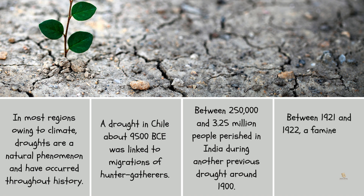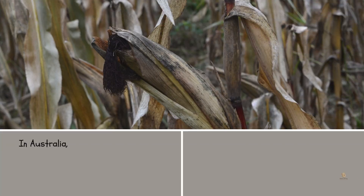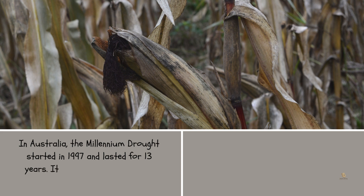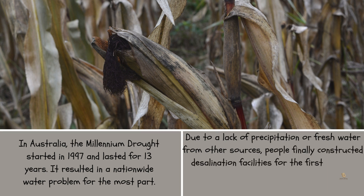Between 1921 and 1922, a famine that killed 5 million people in the Soviet Union was caused by a drought. In Australia, the Millennium Drought started in 1997 and lasted for 13 years. It resulted in a nationwide water problem, and people finally constructed desalination facilities for the first time to turn salt water into potable water.